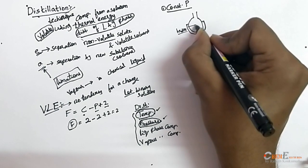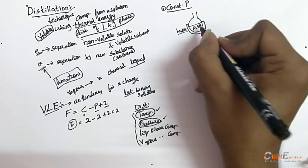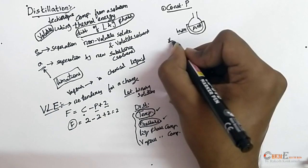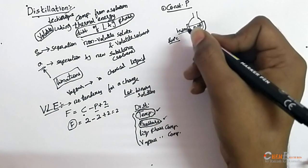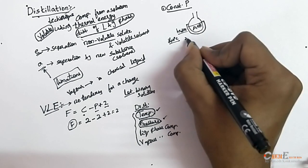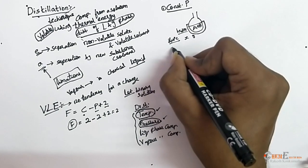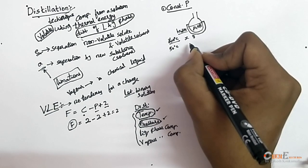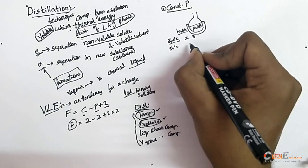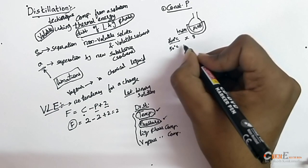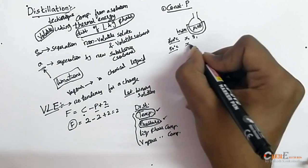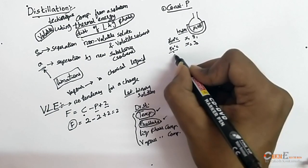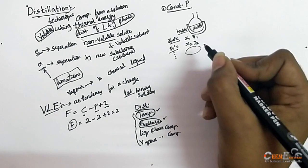Under constant pressure I introduce a solution of components A and B, then heat it. Starting at 40°C I get some vapor and liquid phase compositions x and y. I then increase the temperature to 50°C and wait for equilibrium — meaning no tendency for change in composition. At 50°C I note x2 and y2, the liquid and vapor phase compositions, and similarly repeat for different temperatures.